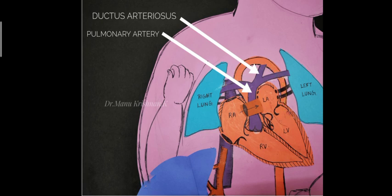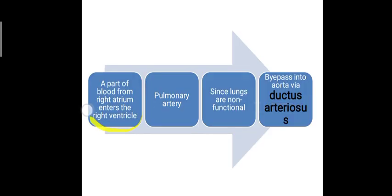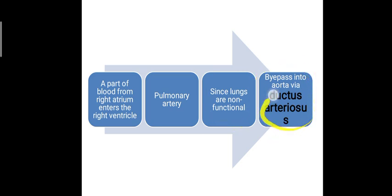So there are three key differences in fetal circulation: first, the ductus venosus which bypasses the liver; second, the foramen ovale which connects the right atrium directly to the left atrium; and third, the ductus arteriosus which connects the pulmonary artery to the aorta. A part of blood from the right atrium enters the right ventricle, goes to the pulmonary artery, and since the lungs are non-functional, bypasses into the aorta through the ductus arteriosus.